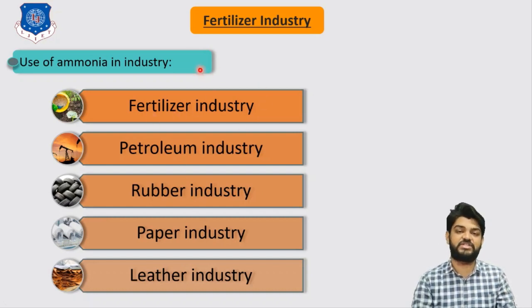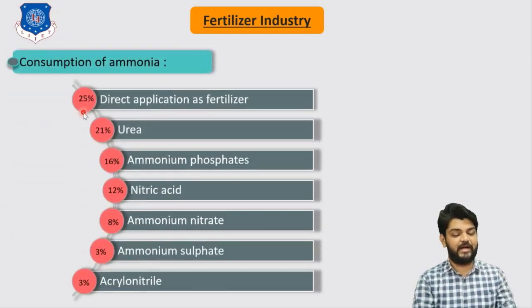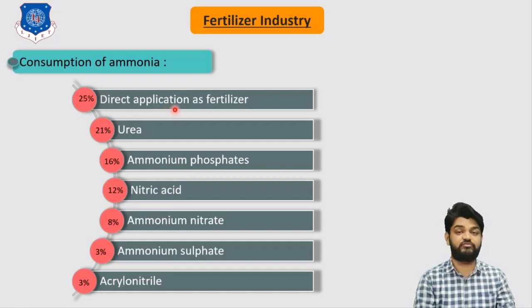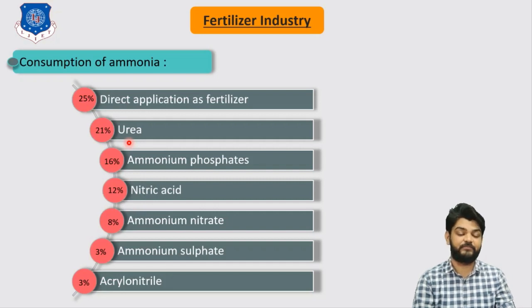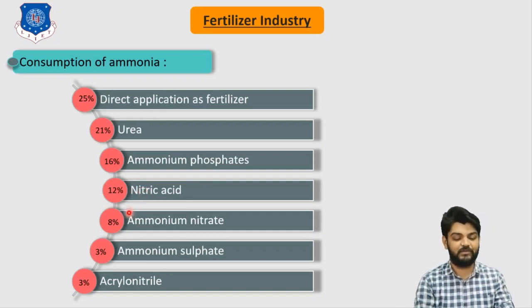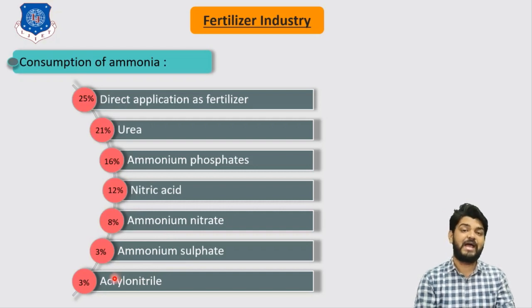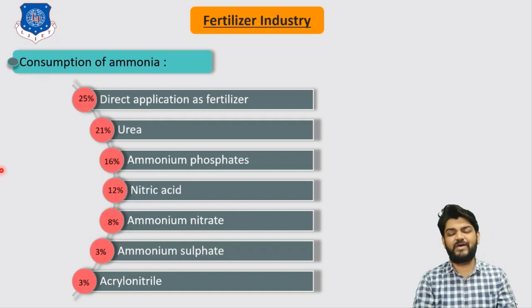Percentage-wise consumption of ammonia: around 25% is directly used as fertilizer; 20% is used for urea production (a nitrogen-based fertilizer); 60% is used to produce ammonium phosphate; 12% is used for nitric acid production (again for fertilizer); 8% is used to produce ammonium nitrate; 3% for ammonium sulfate; and 3% for acrylonitrile production.